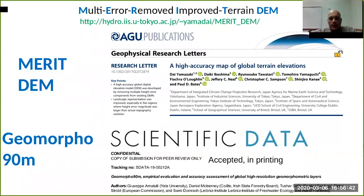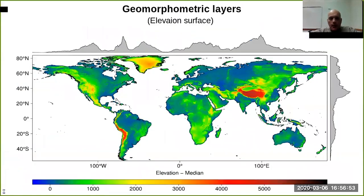The Geomorpho90m dataset is an extraction of the geomorphology features from the MERIT-DEM. Let's see how I built this and how we can derive this information. If you think about a normal digital elevation model, you can derive different roughness indices or different curvatures.